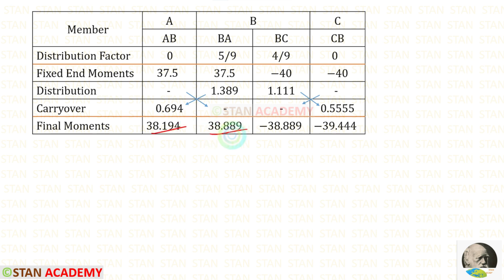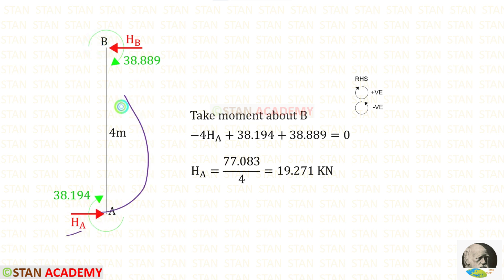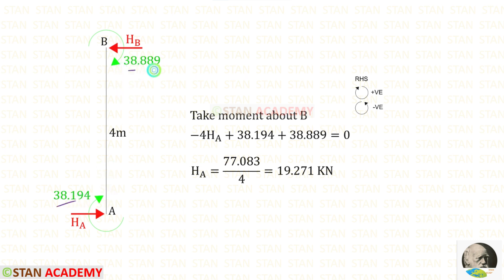Let us take these two moments and find the horizontal reaction in member AB. Both moments are positive, meaning they act in the clockwise direction. Assuming the reaction HA acts towards the right, we take moments about B. HA acts in the anti-clockwise direction, so it is negative: −4·HA. The two moments are clockwise, so they are positive. Finally, for HA, we get 19.271 kN.